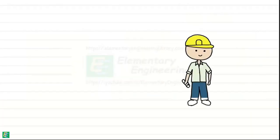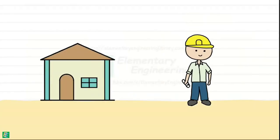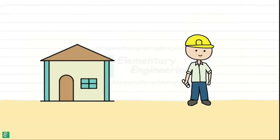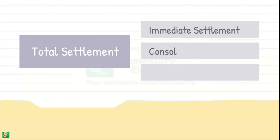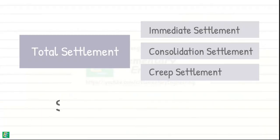As geotechnical engineers, we play a crucial role in ensuring the stability of structures by calculating the amount of settlement the soil will experience under their weight. Total settlement of soil has primarily three components: immediate settlement, consolidation settlement, and creep settlement. The total settlement of soil is the sum of all three factors.